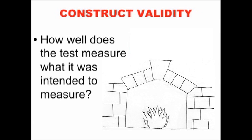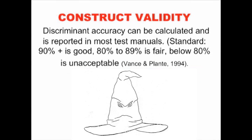In both psychology and speech-language pathology, we have the same standard for construct validity: how well does the test do what it's meant to do? We want a test that accurately identifies children with disabilities from children who are typically developing. If a test is 80 to 89 percent accurate, it's fair. If it's 90 to 100 percent accurate, it's good accuracy.